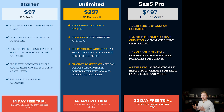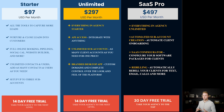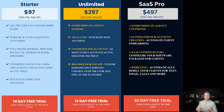Moving over to our unlimited plan, it's $297 per month USD. You get everything from the starter plan, you get API access, and you can integrate other softwares into Go High Level through those API keys.